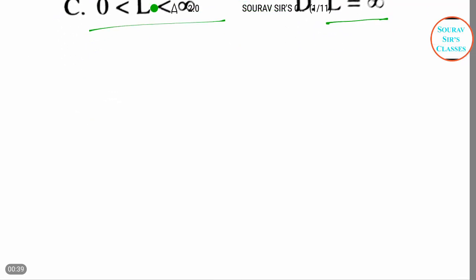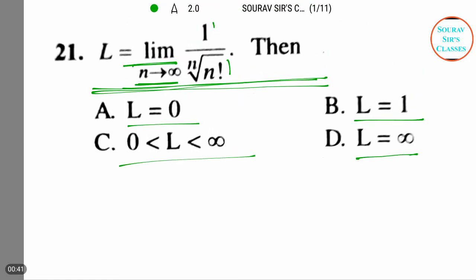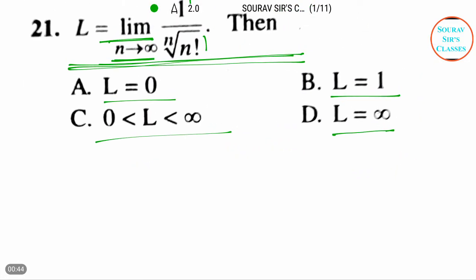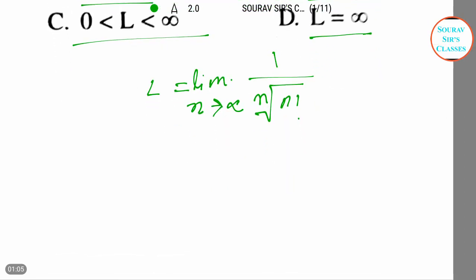The question was, I'm writing down the question for you first. L equals limit n tends to infinity, then 1 by n root over n factorial. This is our question.